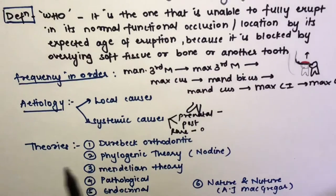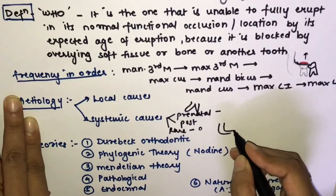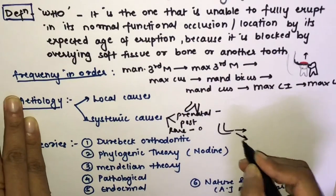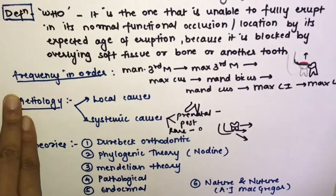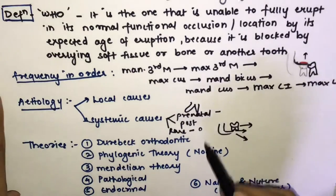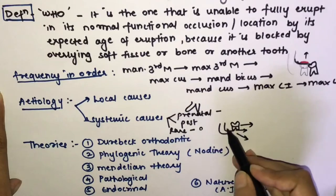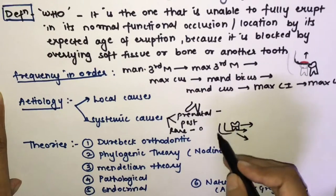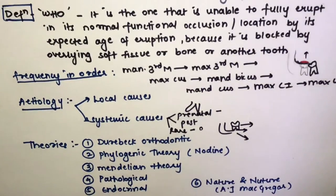The theories responsible for causing impaction: the first is Durbeck's orthodontic theory — the jaws grow in a forward and downward direction while teeth grow forward, and interference in this growth pattern causes impaction, usually due to a small jaw and decreased space.